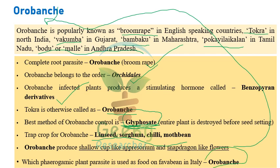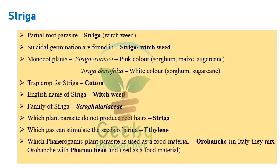Warabanki is also used as food in Italy. The last parasite is Striga, otherwise called witchweed. Suicidal germination is observed in Striga or witchweed.